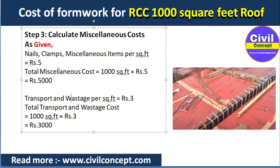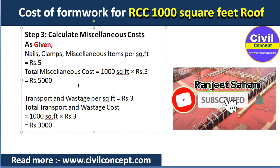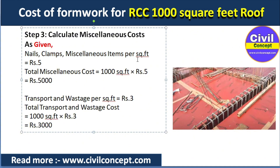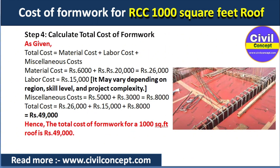In step number three we calculate the miscellaneous cost, which includes transportation, nails, clamps, and wastage. For nails, clamps, and miscellaneous items the standard rate is 5 rupees per square feet, giving a total of 5000 rupees. For transportation and wastage the standard rate is 3 rupees per square feet, giving a total of 3000 rupees.